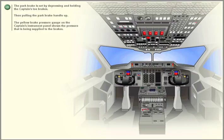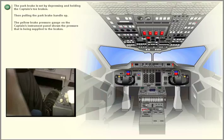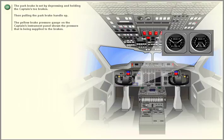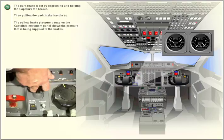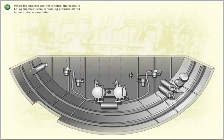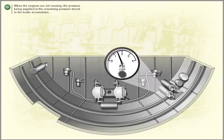The park brake is set by depressing and holding the captain's toe brakes, then pulling the park brake handle up. The yellow brake pressure gauge on the captain's instrument panel shows the pressure being supplied to the brakes. When the engines are not running, the pressure being supplied is the remaining pressure stored in the brake accumulator.